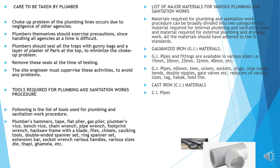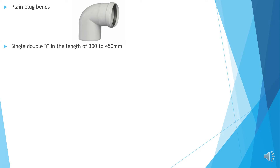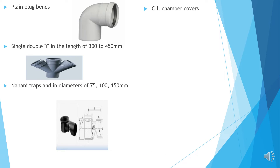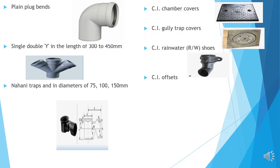Cast iron materials: CI pipes — single and double sockets, single socket double socket connector, plain plug T's, plain plug bends, single and double Y in the length of 300 to 450 mm, nani traps in the diameter 75 to 150 mm, CI chamber covers, CI gully trap covers, CI rainwater shoes, CI offsets, collars.